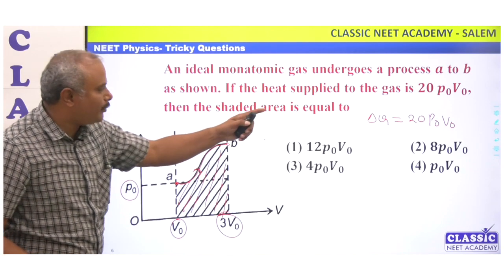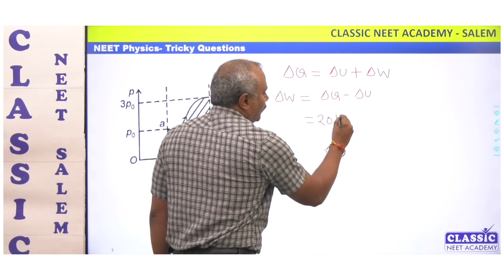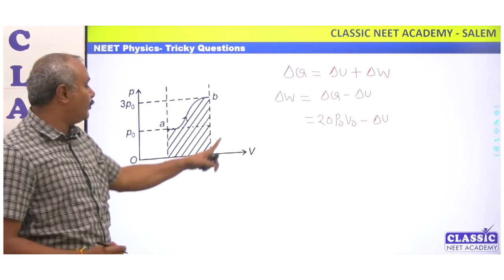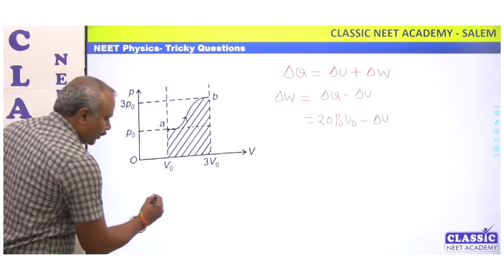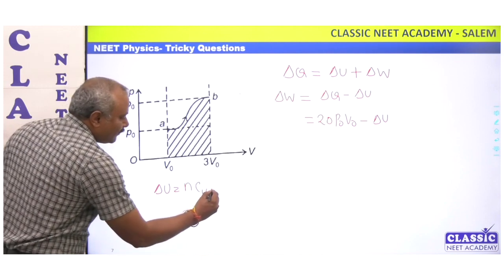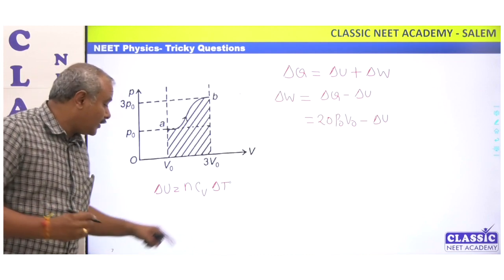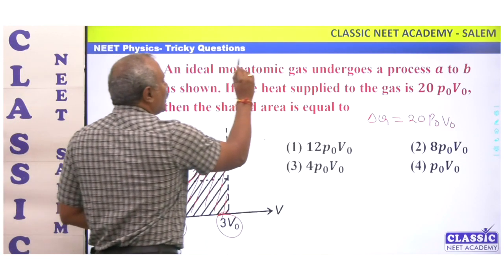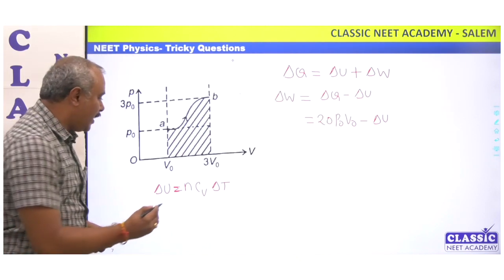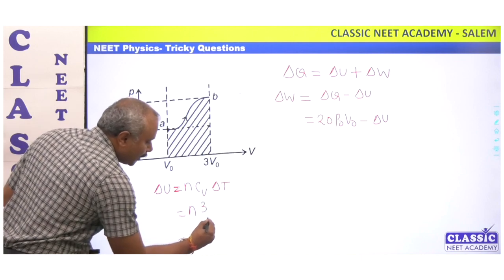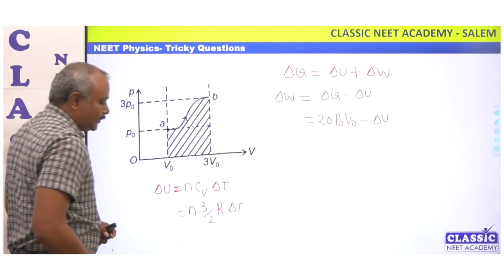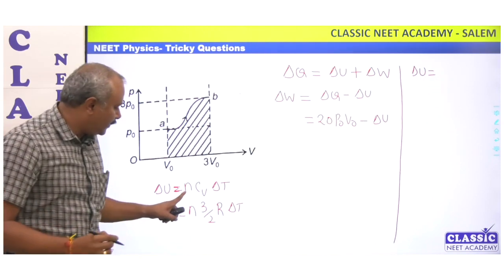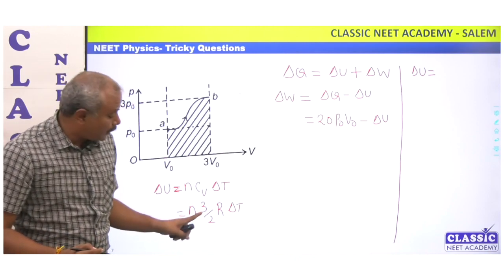So W equals 20P0V0 minus ΔU. Now let's substitute ΔU. The change in internal energy is ΔU = nCv·ΔT. For a monatomic gas, the specific heat at constant volume Cv equals 3/2 R. So ΔU = n × (3/2 R) × ΔT.